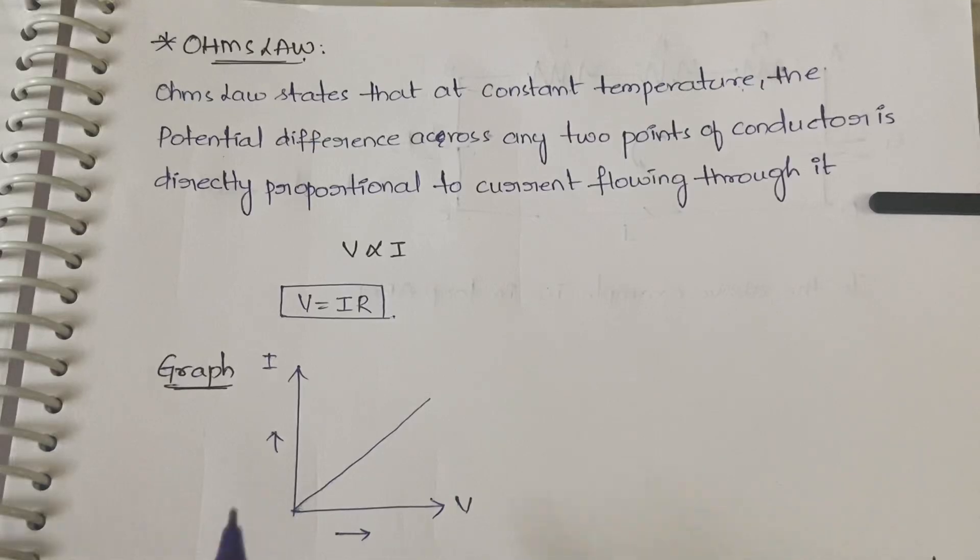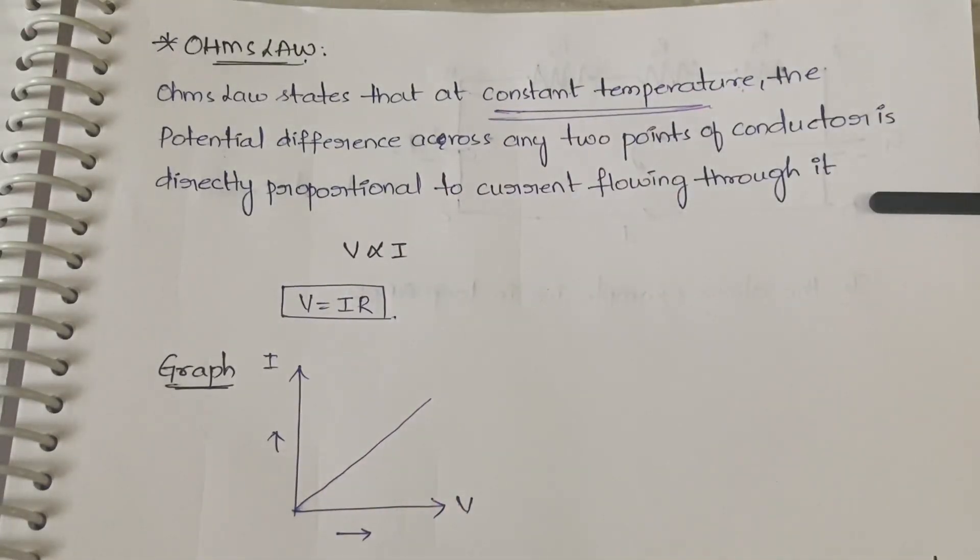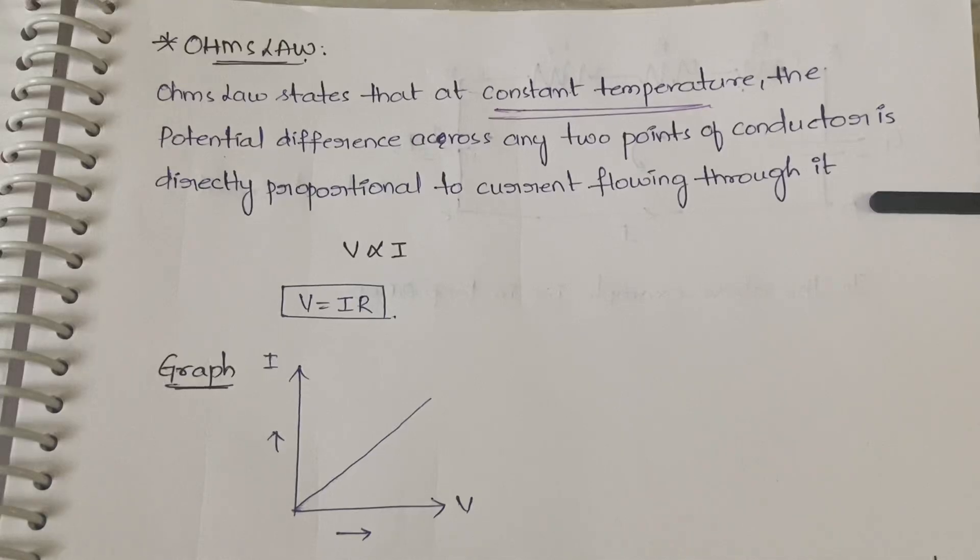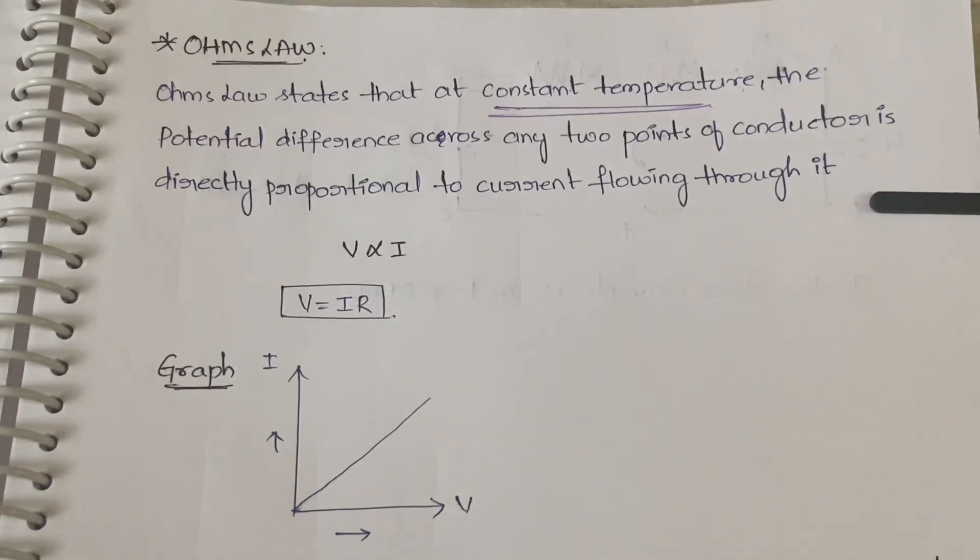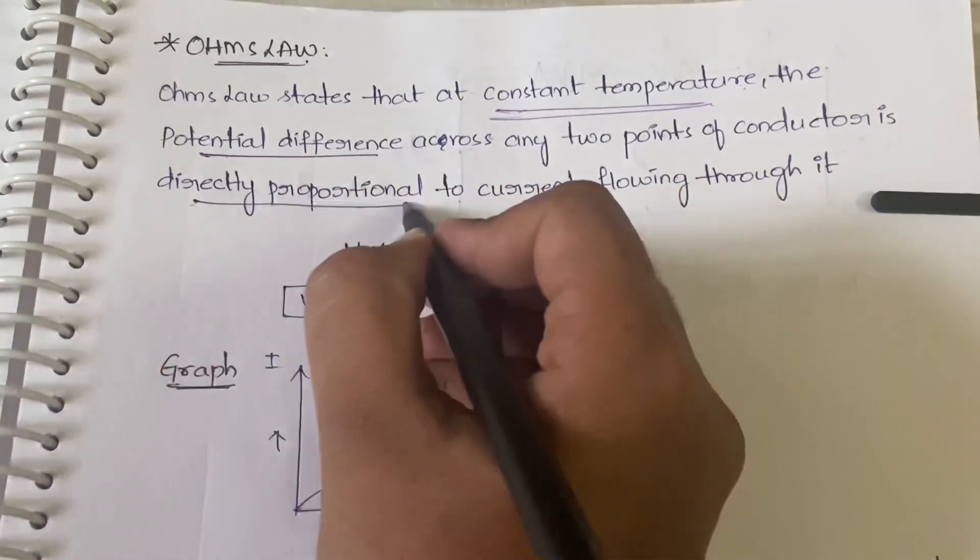The main important things you have to remember: constant temperature. Ohm's Law will not work if the temperature is changing. It will work only if the temperature is constant. Next, the potential difference is directly proportional to the current.